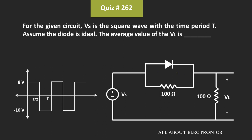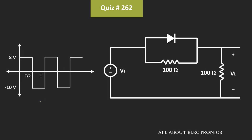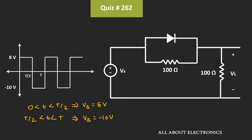That means in the forward bias condition, it will act as a short circuit, while in the reverse bias condition, it will act as an open circuit. For the time 0 to T/2, this input voltage Vs is equal to 8V. Similarly, from T/2 to T time period, this voltage Vs is equal to minus 10V. So during the positive half cycle, the voltage Vs is equal to 8V, while during the negative half cycle, this Vs is equal to minus 10V.